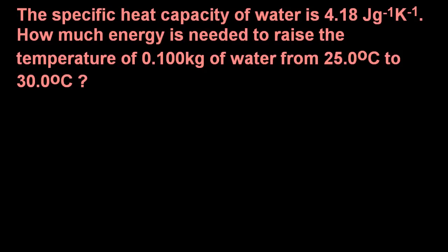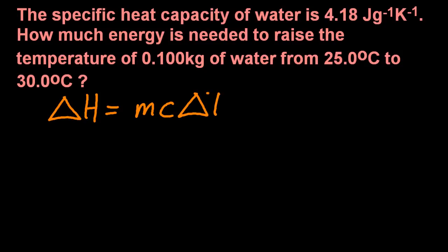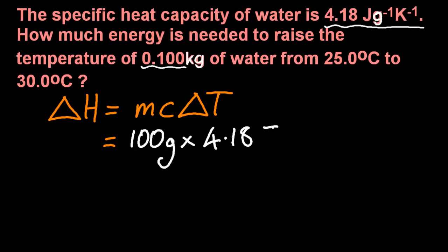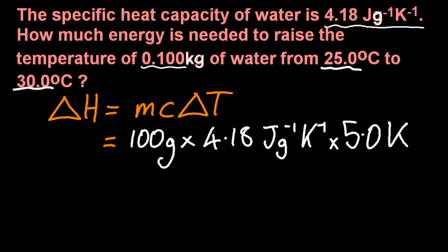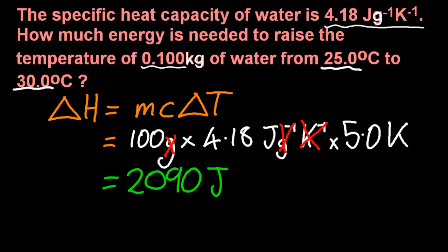Here's a question with a few tricks. Let's write out the equation: delta H is MCAT. So the mass is 0.1 — well, hold on, that's in kilograms, and specific heat capacity is in grams, so I'm going to convert my kilograms to grams. Specific heat capacity is 4.18 for water. And it's in degrees C — should I convert to kelvin? Well, you could, but it's going to give you the same answer, which is 5. Multiply those together, and I know it's joules because the grams cancel with per gram, and the per kelvin cancels with the kelvin, leaving joules.